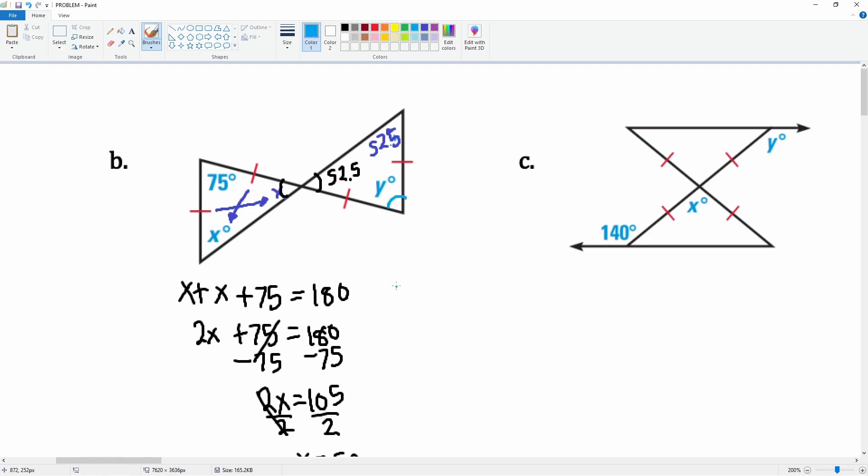So y is also equal to 75 because 75 plus 52.5 plus 52.5 gets you that.